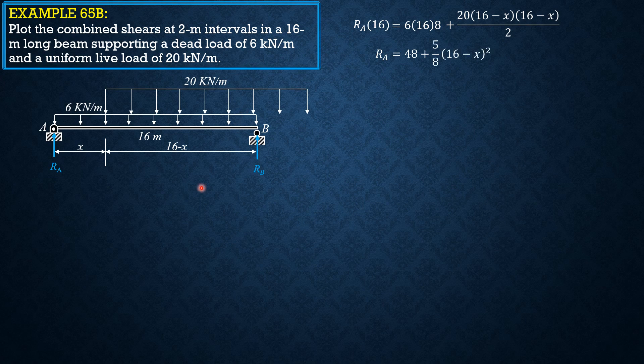Therefore, the shear at section x is Ra minus 6x. Substituting the value of Ra: shear at section x equals 48 plus 5/8 of (16 minus x) squared minus 6x.